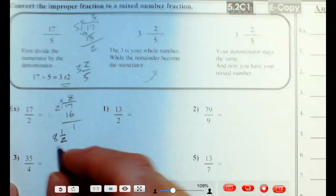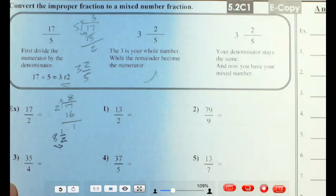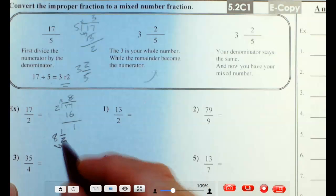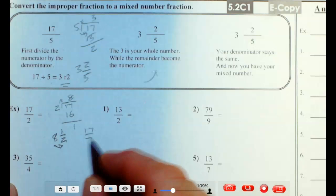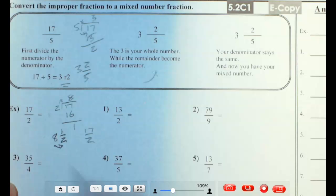Quick check. 8 times 2 is 16. Plus 1 would get me back to that 17 halves. All right, so here's my answer.